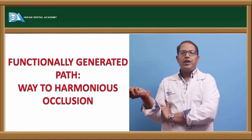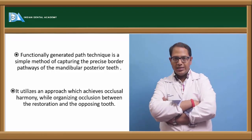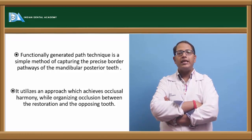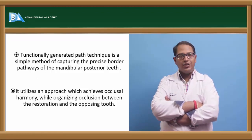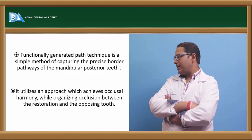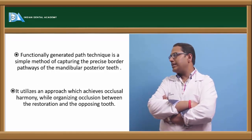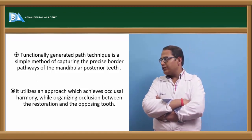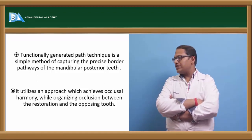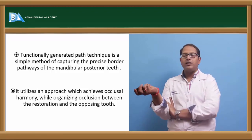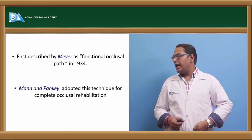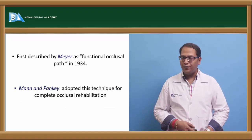Frederick Mayer was the first one who advocated this technique as functionally generated occlusion — for the bridges, as in denture we do, he did it in bridges. Functionally generated path technique is a simple method by capturing the precise border pathway of the mandibular posterior teeth. It utilizes an approach which achieves occlusal harmony between the restoration and the opposing tooth. It was first described by Mayer as a functional occlusal path in the year 1934.